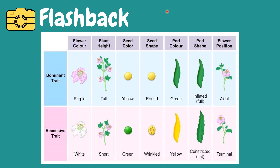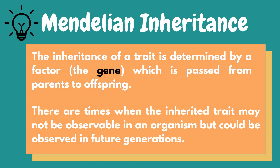In order to understand further the concept of dominant and recessive traits, let's deepen our understanding about Mendelian inheritance. The inheritance of a trait is determined by a factor called a gene. A gene is a unit of heredity and can be found in the chromosomes, which is passed from a parent to offspring, and is held to determine some traits and characteristics. There are times when the inherited traits may not be observable in an organism, but could be observed in future generations. Any organism is a byproduct of both its genetic makeup and the environment. To understand this in detail, we must first appreciate some basic genetic vocabulary and concepts.